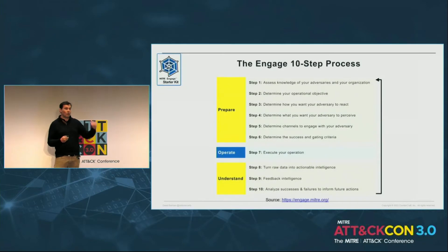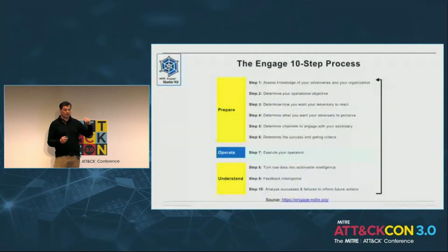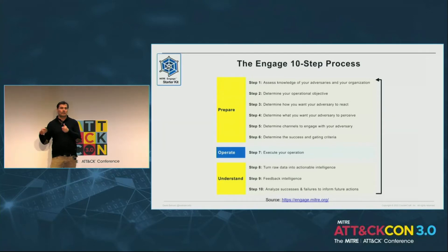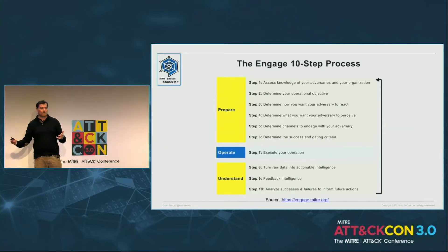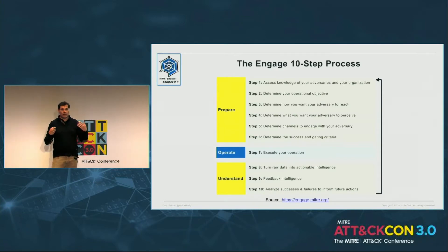There are three main goals that Engage is trying to address. The first is how can we get high fidelity alerts or detect adversaries as soon as possible. The second is how can we impose cost to the adversary — there's a lot of discussion on Twitter about imposing cost, but I think that's a good way to express it. The third is how can we collect as much intelligence from the attackers so we can use that with other tools or share it with peers. We also need to focus a lot on planning — from knowing your adversary, to defining step number six: the success and gating criteria. When do we need to stop? Because we've collected enough intelligence, or because the adversary has noticed it's a deception scenario.